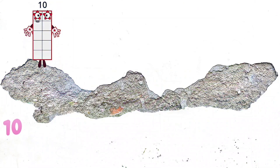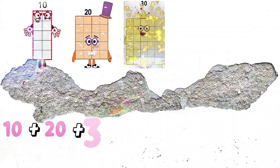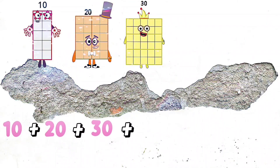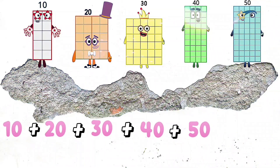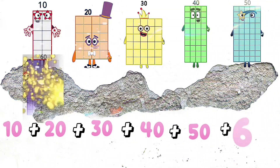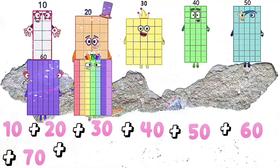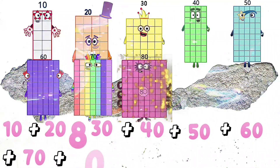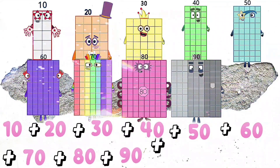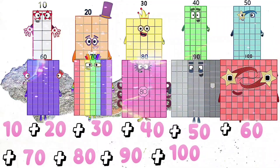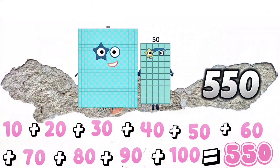10 plus 20 plus 30 plus 40 plus 50 plus 60 plus 70 plus 80 plus 90 plus 100 is equals to 550.